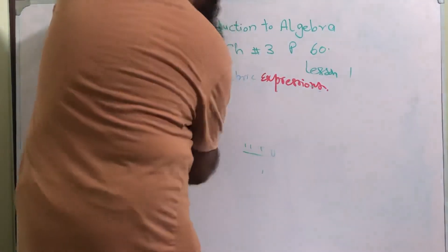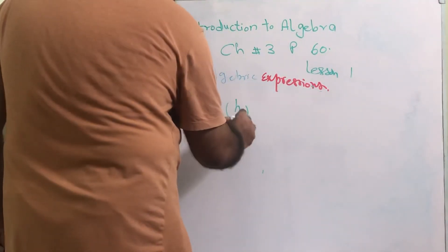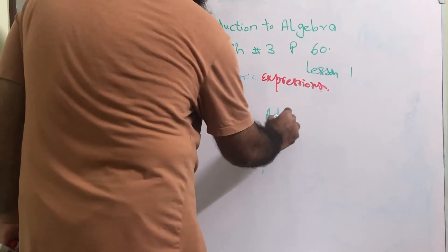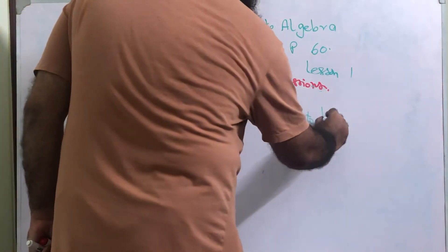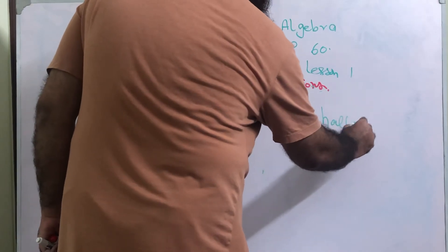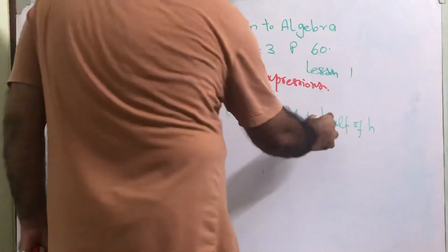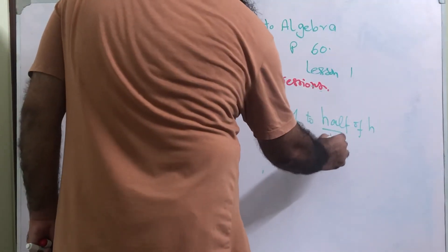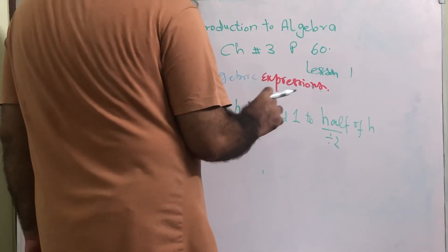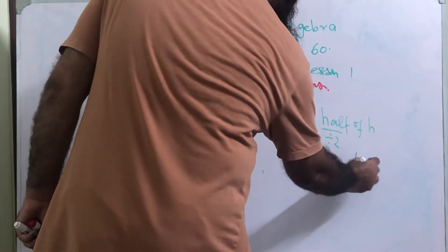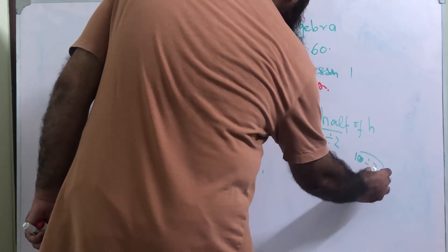Then part h: add 1 to half of h. What is half of h? It means divided by 2. When you divide anything by 2 it becomes half. For example, 10 divided by 2 is 5 — half of 10 is 5.